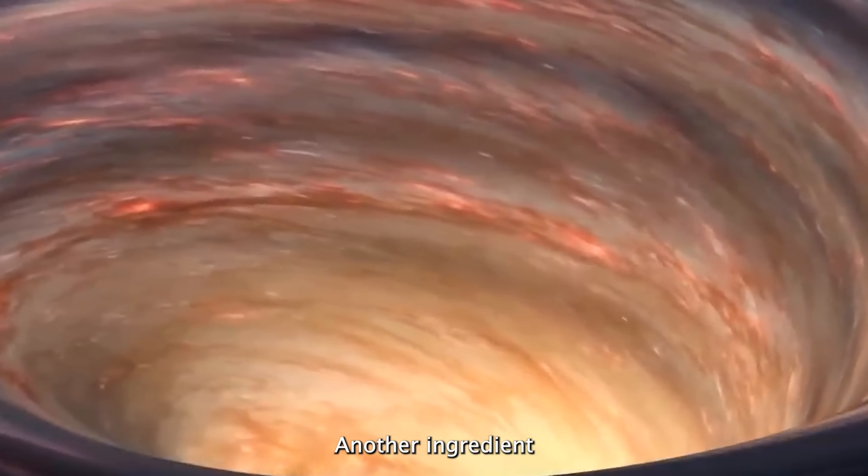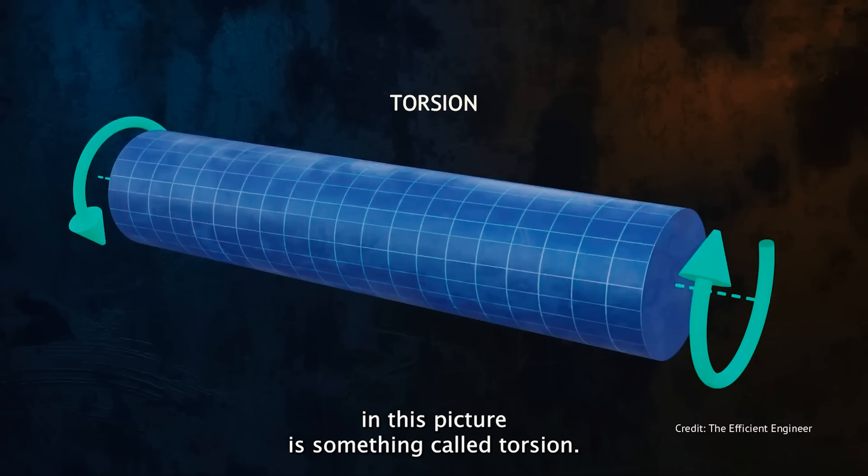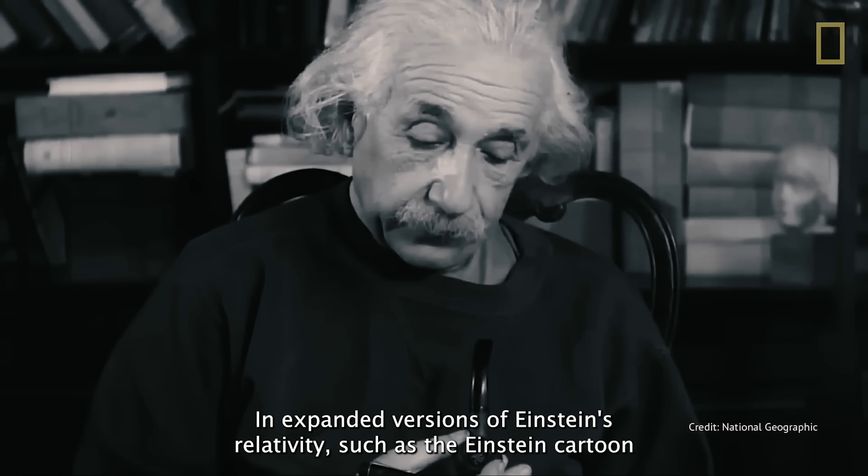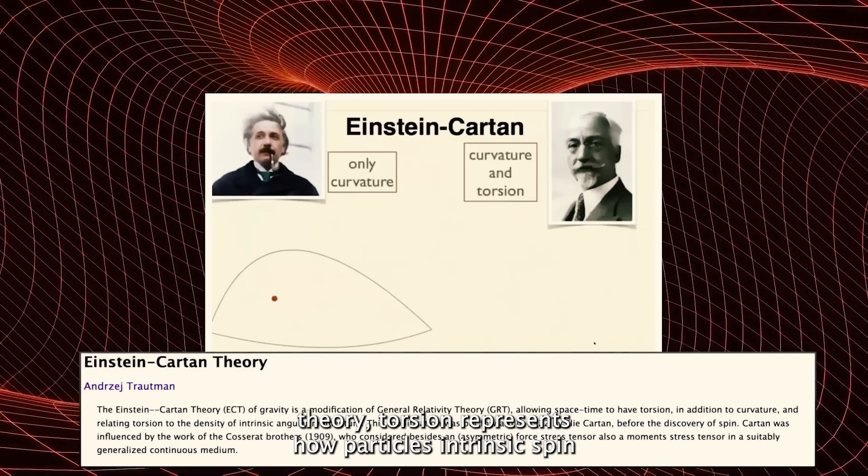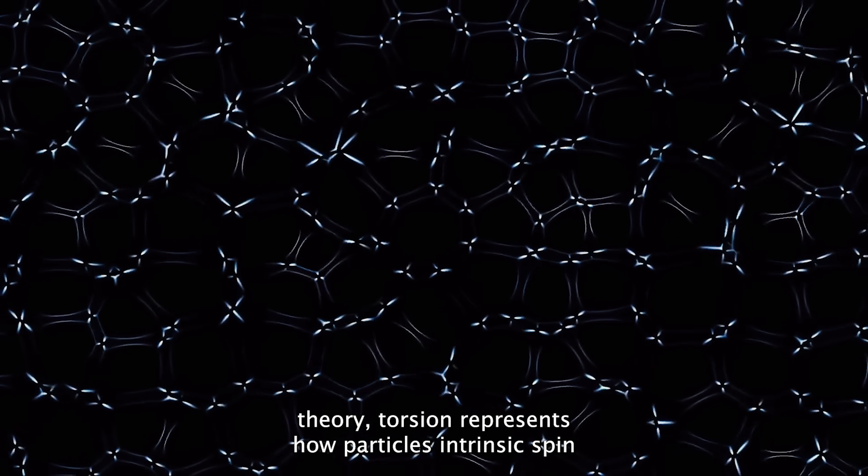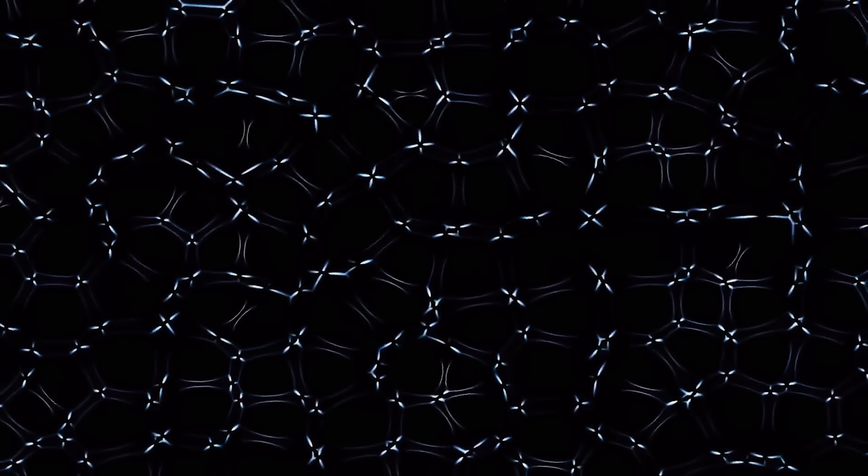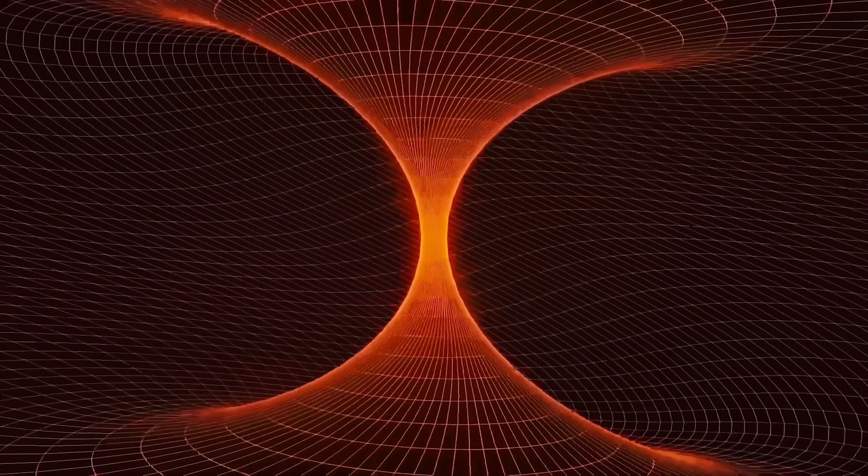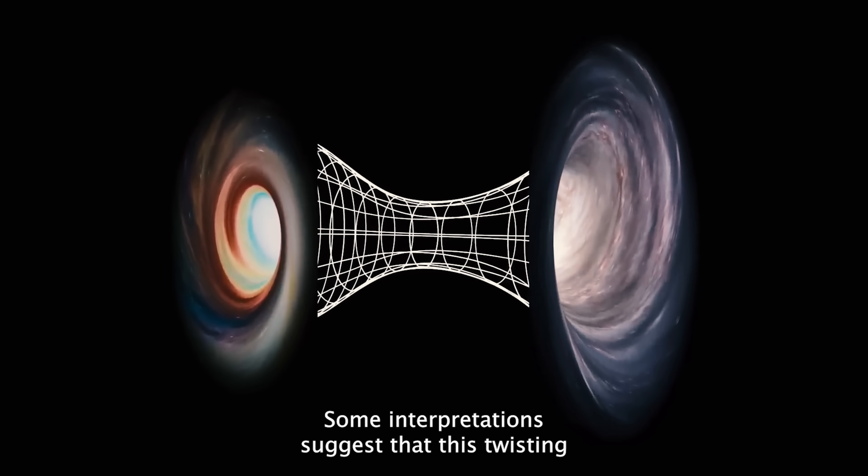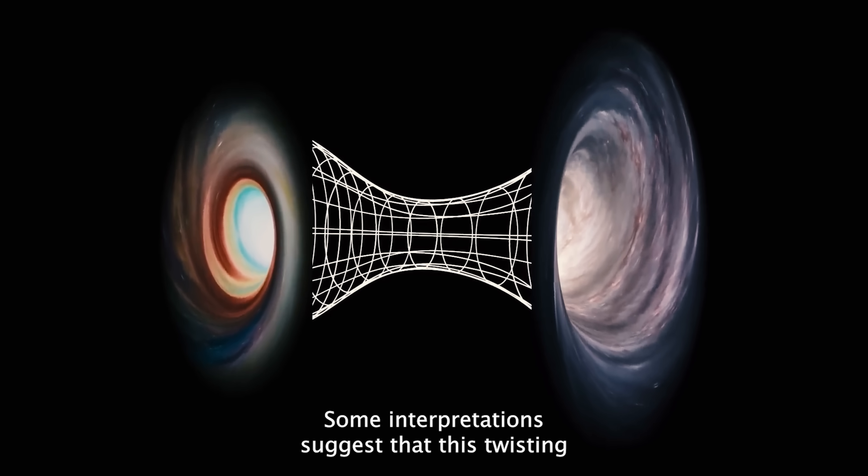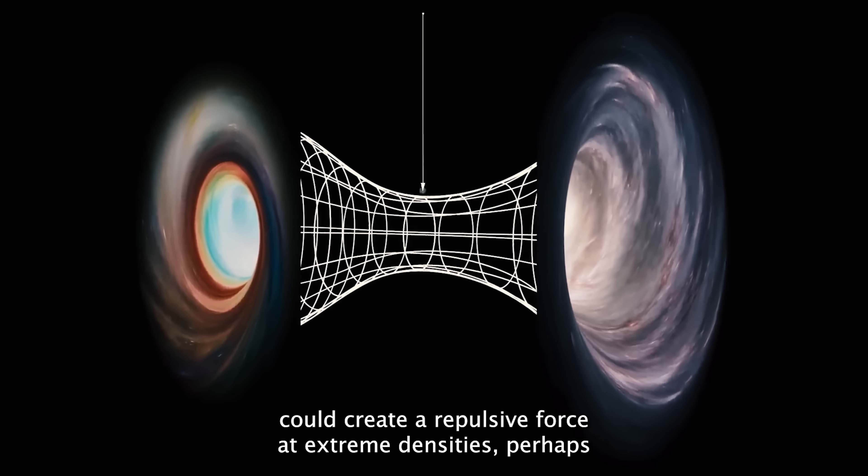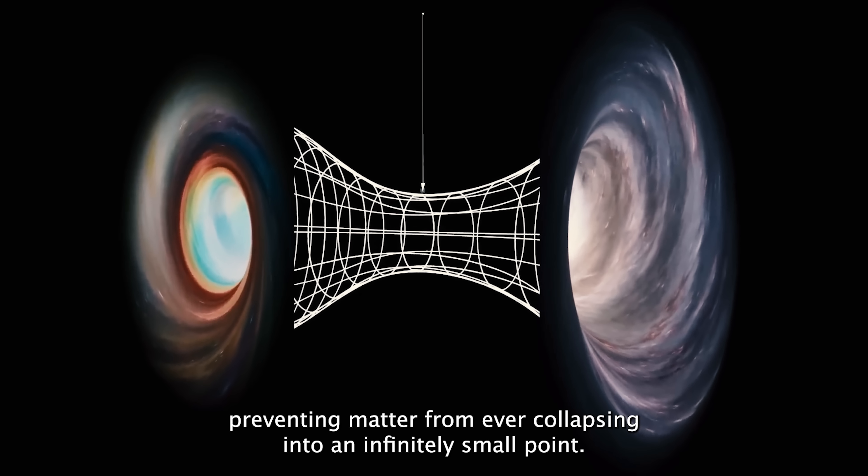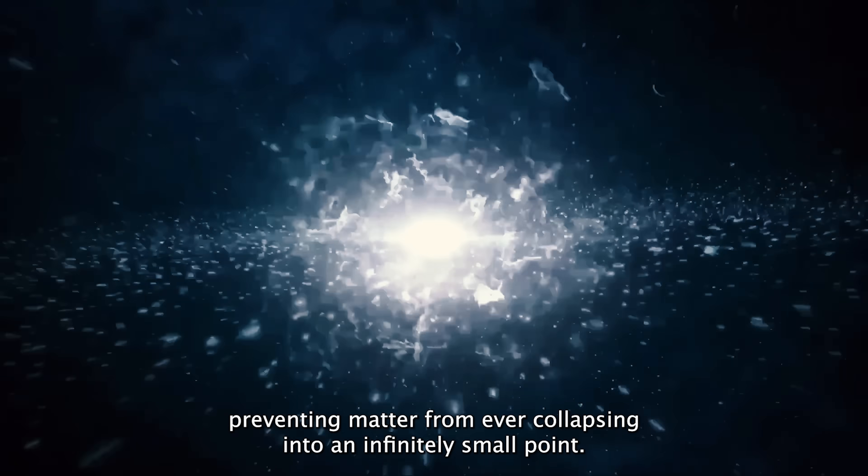Another ingredient in this picture is something called torsion. In expanded versions of Einstein's relativity, such as the Einstein-Kartam theory, torsion represents how particles' intrinsic spin can twist spacetime itself. Some interpretations suggest that this twisting could create a repulsive force at extreme densities, perhaps preventing matter from ever collapsing into an infinitely small point.